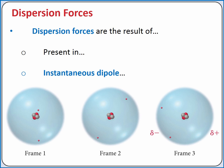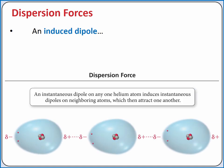But at that instant, we have a separation of the center of positive and negative charge in our atom, and we set up an instantaneous dipole. Now, that helium atom with the instantaneous dipole is next to other helium atoms in the solid. That instantaneous dipole can induce a dipole in a neighboring atom. The partial positive in the instantaneous dipole can attract the electrons of the neighboring atom, setting up an induced dipole, causing an attraction between the two helium atoms.